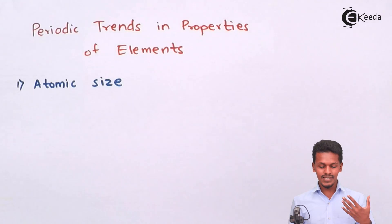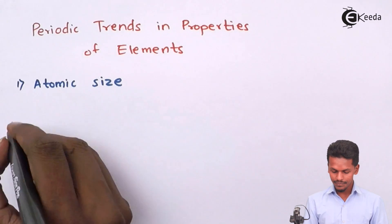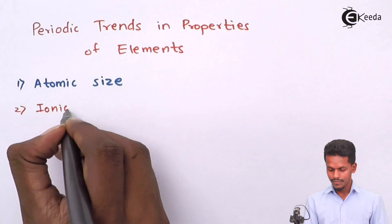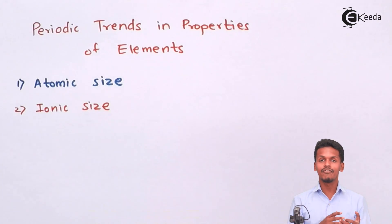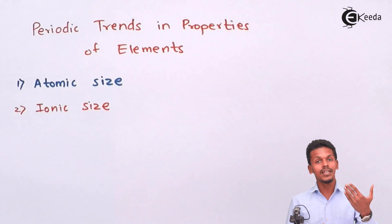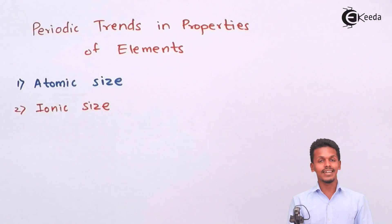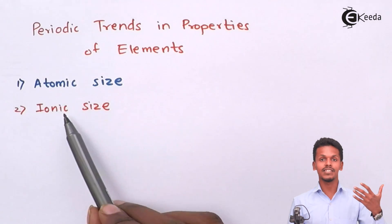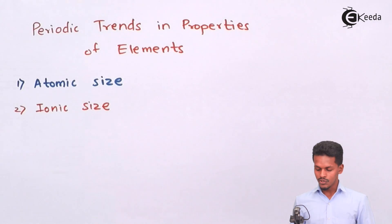The next property is ionic size. Similar to atomic size, it is the distance between the nucleus and the outermost valence shell of an ion that contains an electron. The difference is that atomic size applies to an atom while ionic size applies to an ion, which can be a cation or an anion.